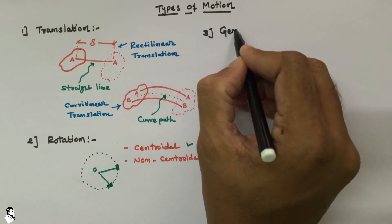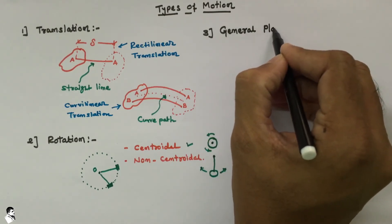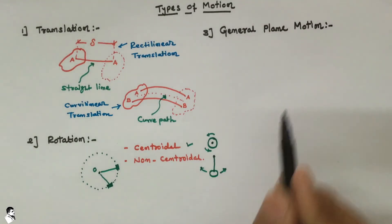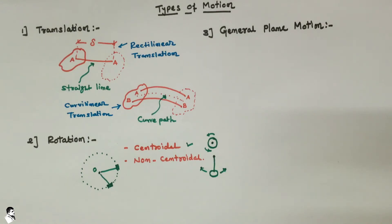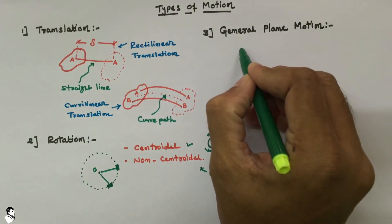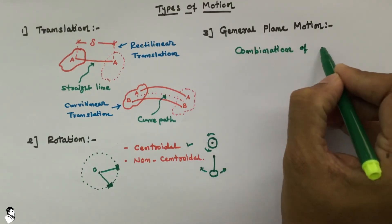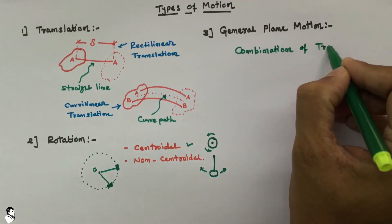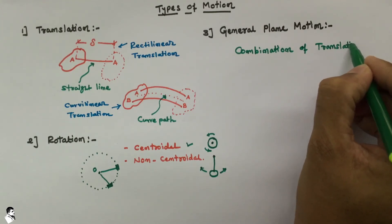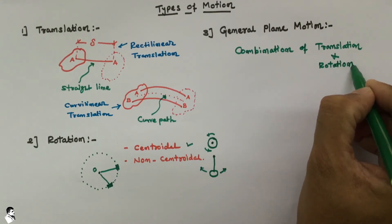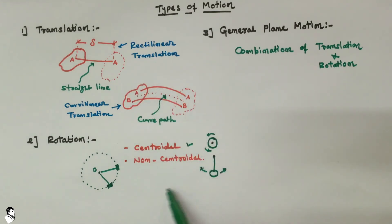If we go further to the third type of motion, it is generally known as general plane motion. It is not a new thing but is basically a combination of number one and number two — we combine both translation and rotation — and that combined motion is known as general plane motion.